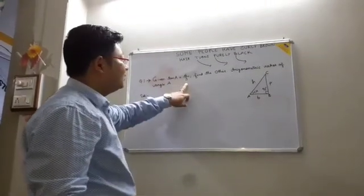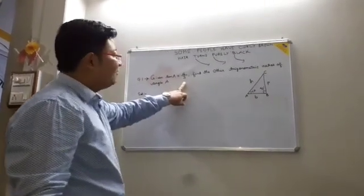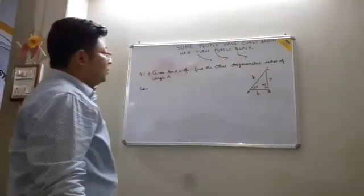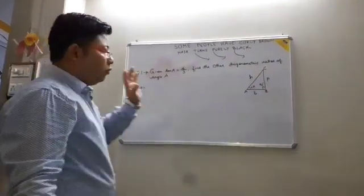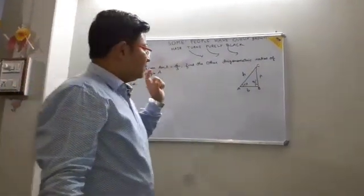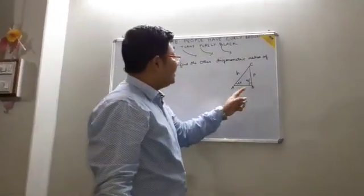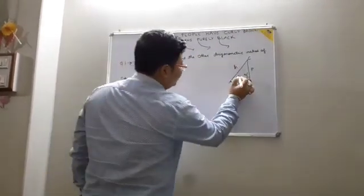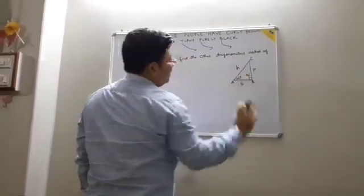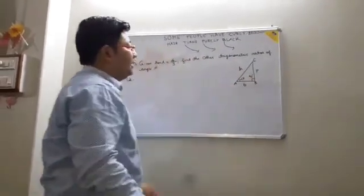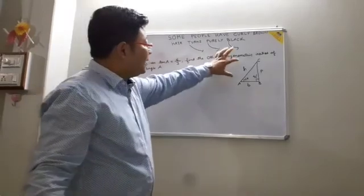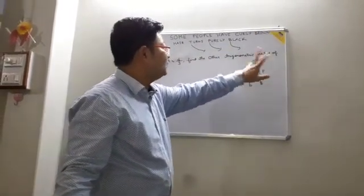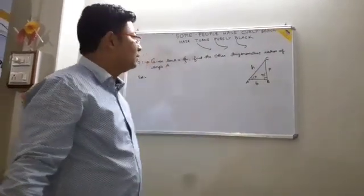Here is the question: given tan theta equal to 4 by 3, find the other trigonometric ratios of angle A. We will assume a right angle triangle ABC where A is the angle, AC is the hypotenuse, AB is the base, and BC is the perpendicular.